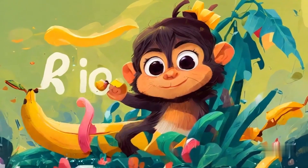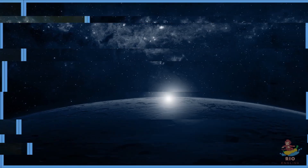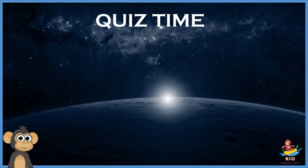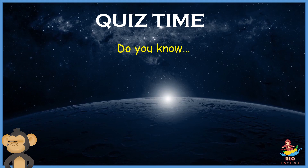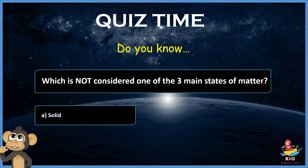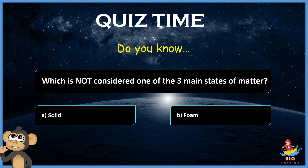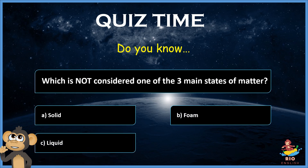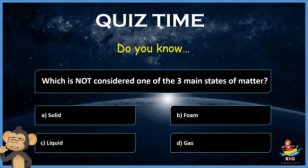Real English. Do you know which is not considered one of the three main states of matter? A. Solid. B. Foam. C. Liquid. D. Gas. Please leave your answer below.